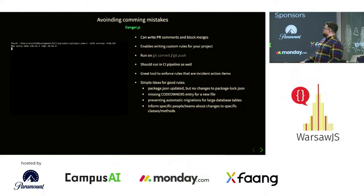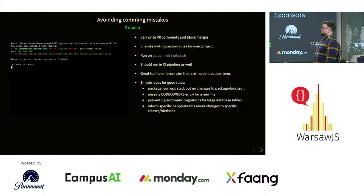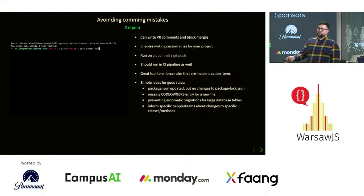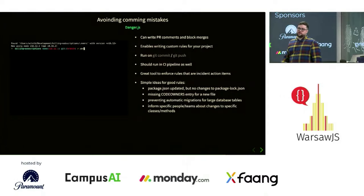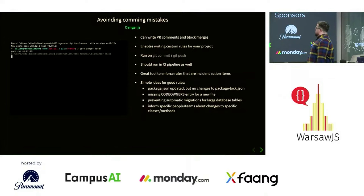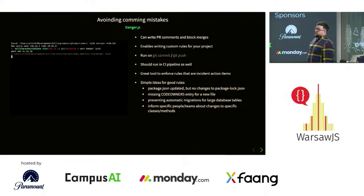Some ideas for good danger.js rules — one we actually use: if you updated package.json but didn't update package-lock.json, that's probably a dependency issue. Even if you don't block the PR, you'll at least get a comment saying 'maybe verify this is correct and you didn't forget to run yarn install and commit your lock file.' Another example: some database tables cannot be migrated automatically because they're too large and will cause downtime — you can prevent those kinds of migrations from being committed and deployed to production.